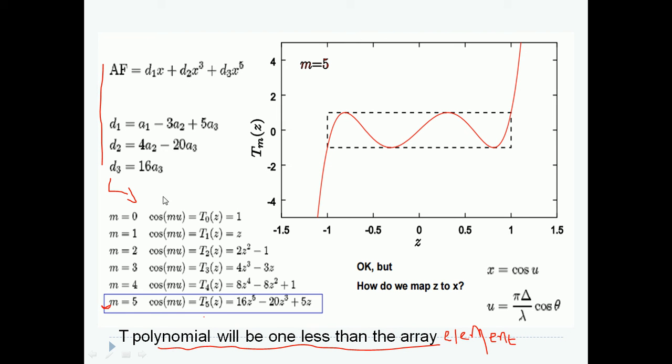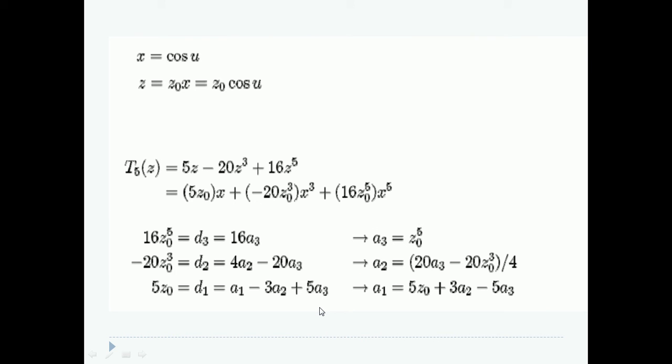I repeat that the Chebyshev polynomial will be 1 less than the array elements. My array elements are 6, so I have to take M equals 5. That is 16Z to the 5th minus 20Z cubed plus 5Z. Initially I substituted as X equals cos U. I will take Z equals Z naught X, which is nothing but Z naught cos U. I will substitute in T5, 16Z to the 5th minus 20Z cubed plus 5Z. This is the expression of Chebyshev polynomial.